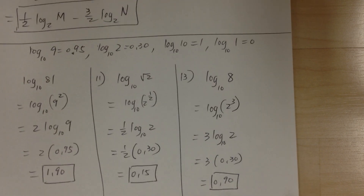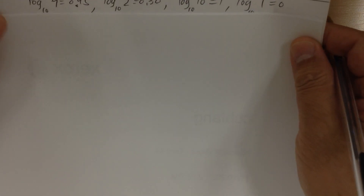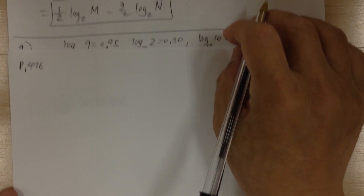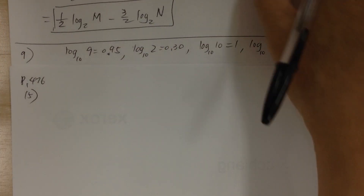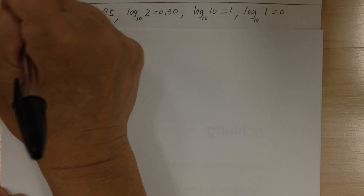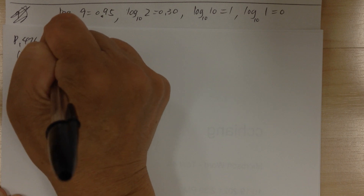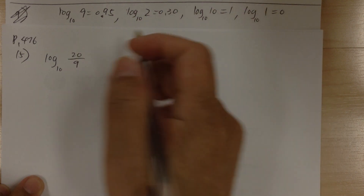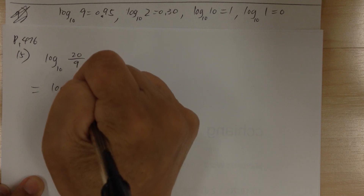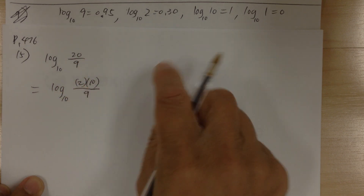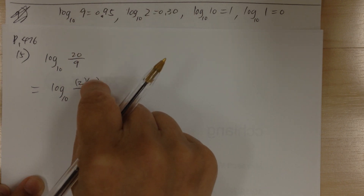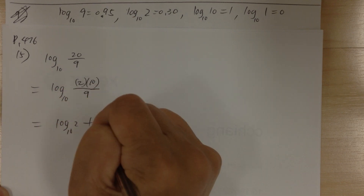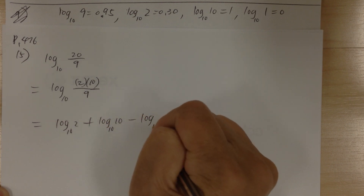Let's go to number 15. I'm looking for log base 10 of 20 over 9. You have to break this into a combination of those numbers. Now 20 equals 2 times 10, so I can use 2, 10, and 9. So this equals log 2 plus log 10 minus log 9. When you have multiplication you add; for division you subtract.